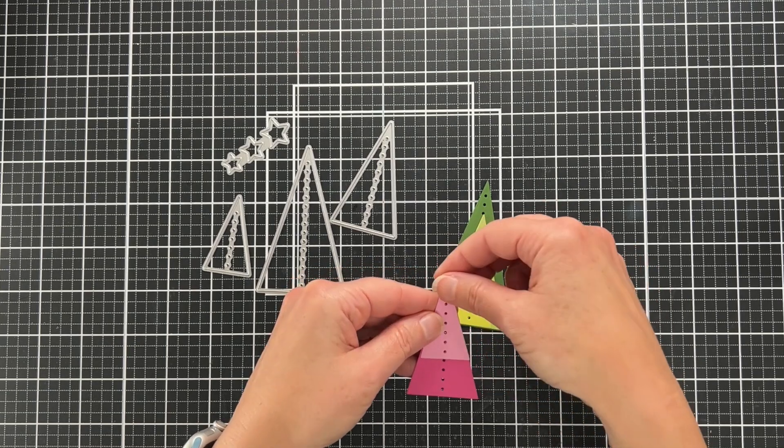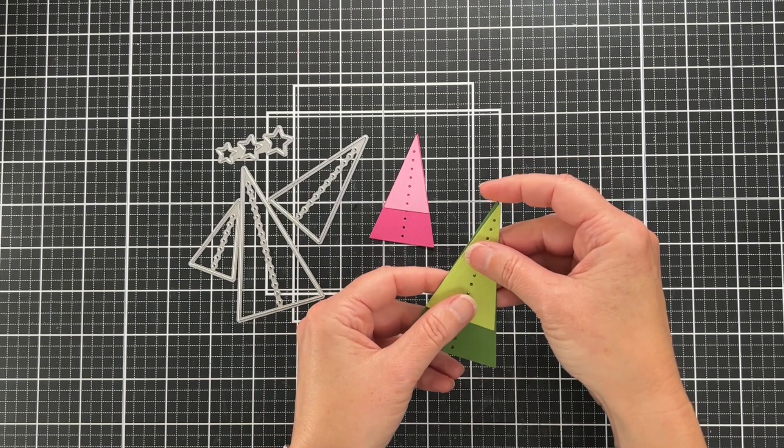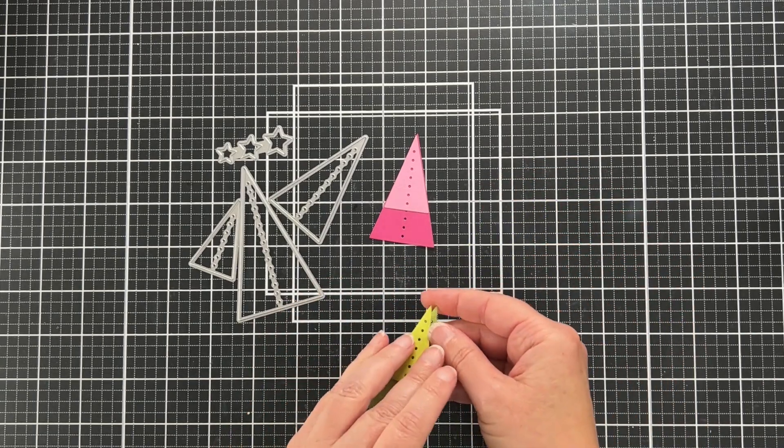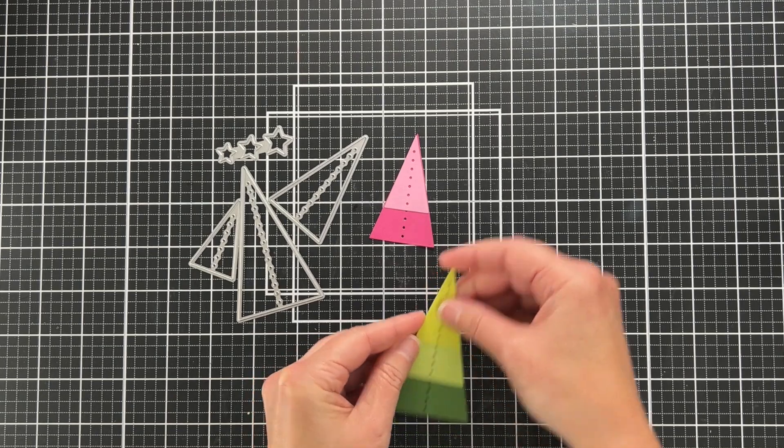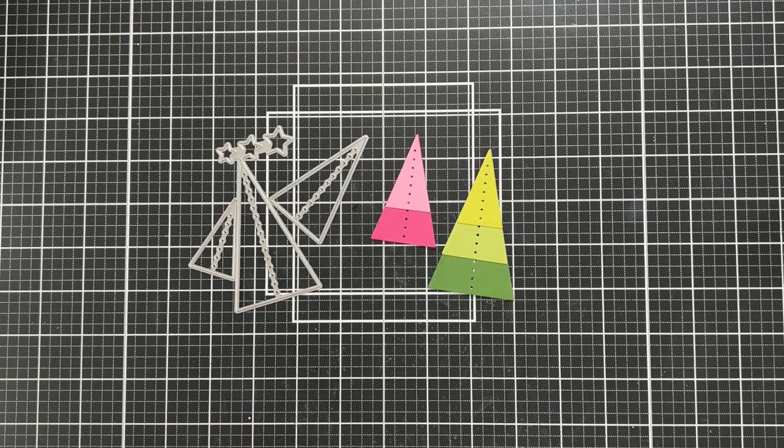But I decided I wanted to do things a little bit differently—big shock, I know. I'm going to be putting the smaller triangles at the top, so they're going to kind of look like striped trees or an ombre effect.